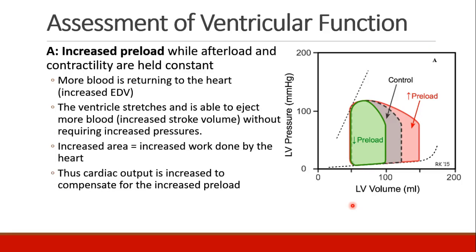We're going to start by looking at changes in preload, not changing contractility or afterload — just preload. We know this is somewhat theoretical because in the body everything is interrelated. So we've increased preload — that is, venous return — meaning more blood is returning to the heart. That's an increased end diastolic volume. Our red curve has an increased end diastolic volume compared to the gray control. There's more blood in the heart at the end of filling, so the ventricle stretches and can eject more blood, resulting in an increased stroke volume without increasing pressures.